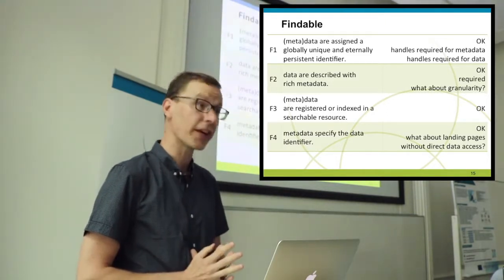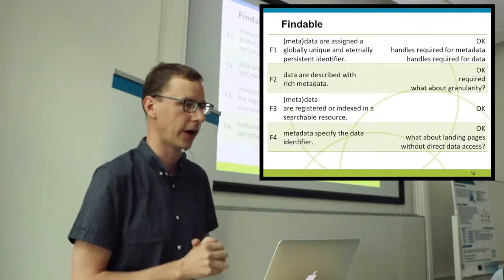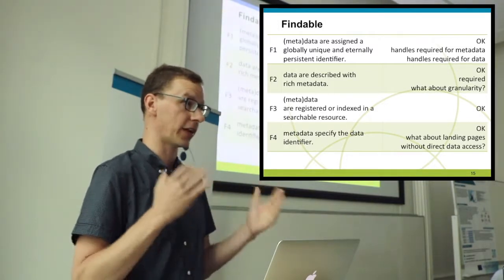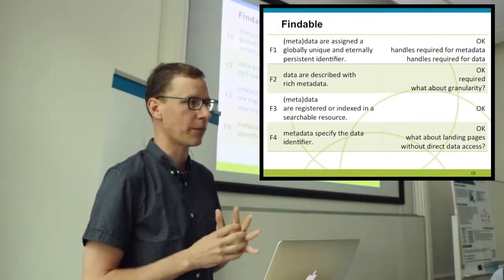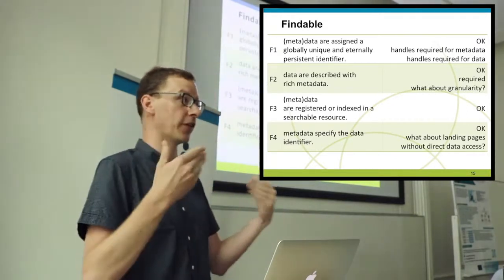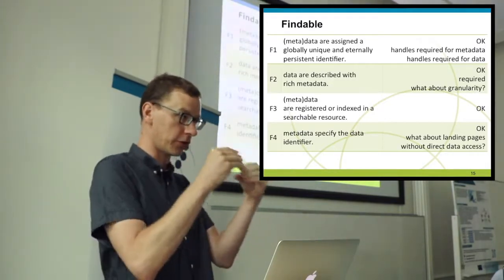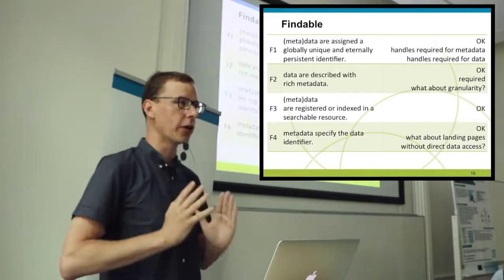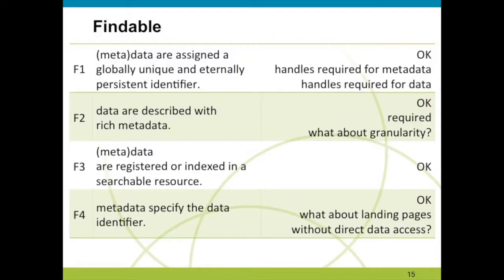The second sub-requirement is that data are described with rich metadata. We've already seen how we model metadata with its component approach — it's definitely possible to provide rich metadata with that. An important side question not covered in the FAIR requirements is the issue of granularity: you can describe a huge collection with one metadata record and technically be FAIR, but in practice it may be more useful to split it into smaller blocks.